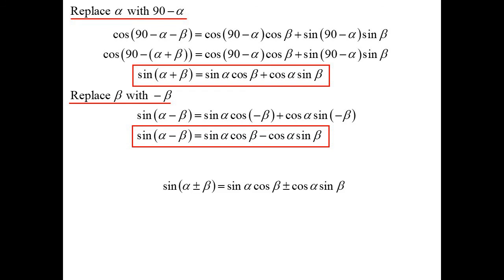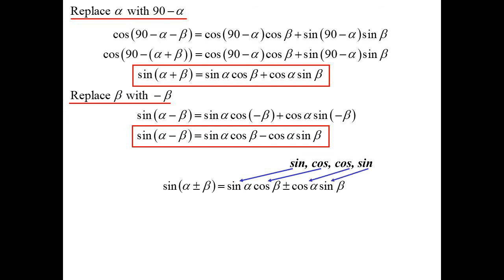So sin(α ± β) = sin α cos β ± cos α sin β. The pattern is: sine cos cos sine. And if it is the sine ratio, then the sign is the same — so if it's the sine, it's the sine.